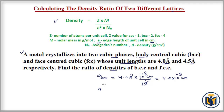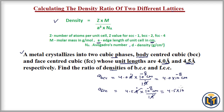In a similar way, we find the unit length of FCC structures. The unit length is 4.5 angstroms, multiplied by 10 to the power of minus 8 centimeters per angstrom. The angstrom units cancel out, giving us 4.5 multiplied by 10 to the power of minus 8 centimeters.